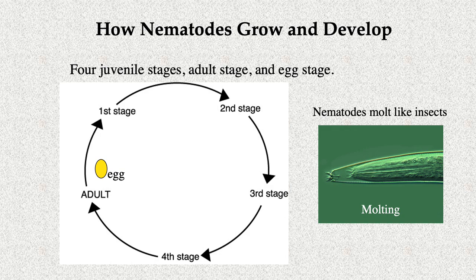Nematodes molt like many other invertebrate animals such as insects. This diagram shows the general life history of a nematode: there's the egg, four juvenile stages, plus the adult stage. When a juvenile hatches from the egg, it will start feeding, grow, then become quiescent and undergo molting where the outer layer of the nematode is shed. That pattern repeats through first, second, third, and fourth stage juveniles, then a molt to the adult stage. Most nematodes have separate sexes — a male and a female.